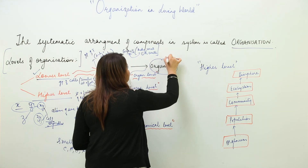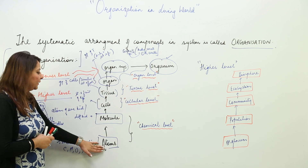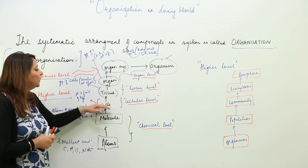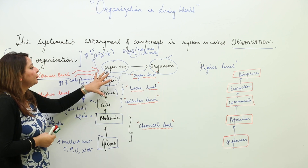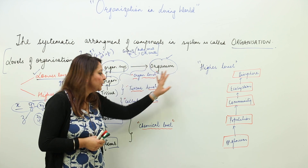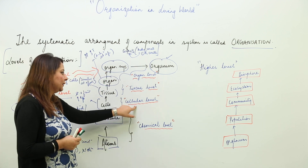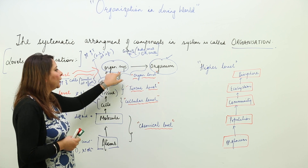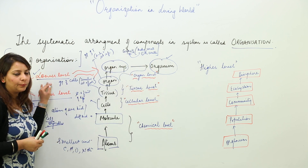All organ systems — like the endocrine system, nervous system, and others — unite to form an organism. So to summarize the lower level: atoms give rise to molecules, molecules give rise to cells, similar cells form tissue, tissues form organ, organs form organ system, and organ systems form an organism. Atom and molecule fall under chemical level; cell under cellular level; tissue under tissue level; and organ, organ system, and organism under organ level.